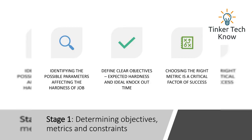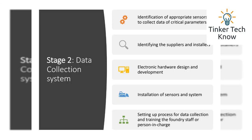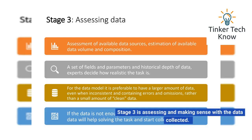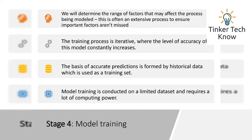Stage 1 is determining clear objectives, choosing the right metrics, and determining the constraints. Stage 2 is establishing a data collection system using various sensors, embedded system development, installation of sensors, and setting up the data collection process. Stage 3 is assessing and making sense of the data collected. Stage 4 is model training — after determining the range of factors affecting the process, an iterative model is developed. Accuracy depends on historical data and fine-tuning of the model.